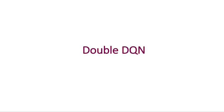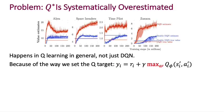Now that we've seen the classic DQN algorithm, let's look at this idea called double DQN, which further improves the performance of DQN. The core problem that double DQN is trying to address is this observation that the optimal Q-star, which double DQN is trying to learn, is actually never learned correctly.